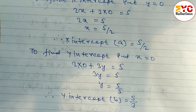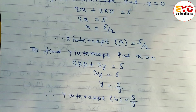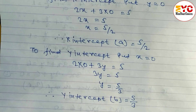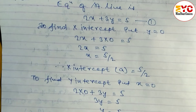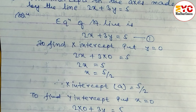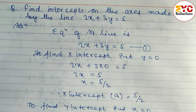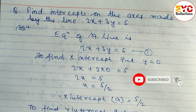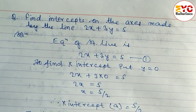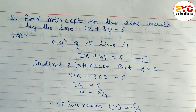So the x-intercept is 5/2 and the y-intercept is 5/3. Hope you understand how to find the x-intercept and y-intercept from the given equation of a straight line. If you understand, please hit the like button. If you are new to my channel, please consider subscribing and don't forget to hit the bell button to get notifications of upcoming videos. Thanks for watching till the last — keep supporting and keep sharing with your friends. Thank you.